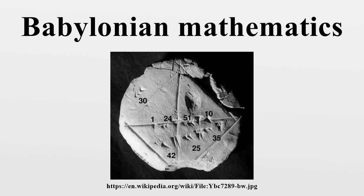Pliny states, on eclipse predictions: after their time the courses of both stars for 600 years were prophesied by Hipparchus. This seems to imply that Hipparchus predicted eclipses for a period of 600 years, but considering the enormous amount of computation required, this is very unlikely.